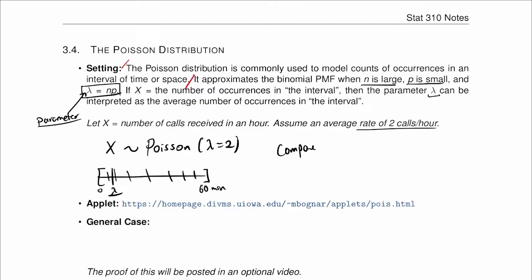We can compare the PMFs. For example, if we have the binomial distribution with n equal to 4 and p equal to 0.5, and the binomial distribution with n equal to 8 and p equal to 0.25, and the binomial distribution with n equal to 100 and p equal to 0.02.